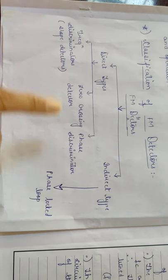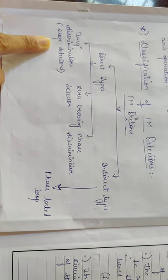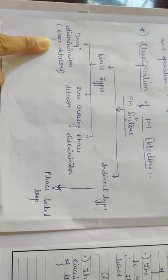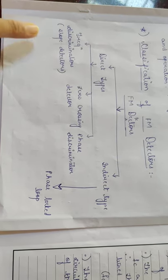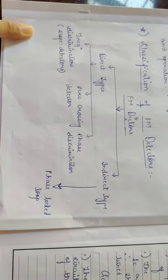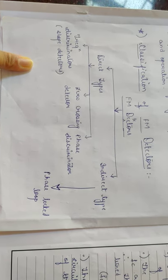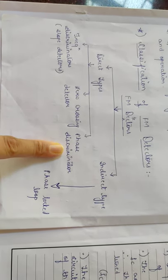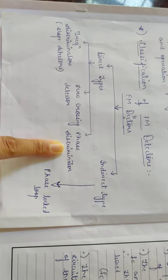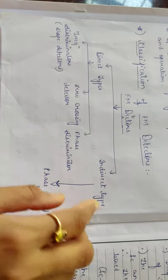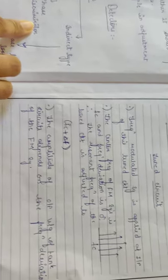According to the syllabus, we will cover frequency discriminators, which are slope detectors. Within slope detectors, we are going to see the simple slope detector, the balanced slope detector, and the phase discriminator. The third one we will cover is the ratio detector.